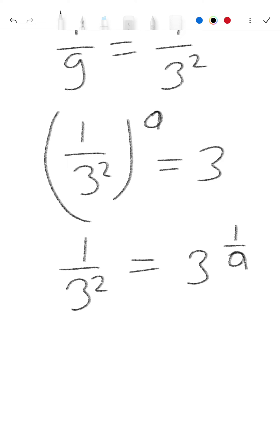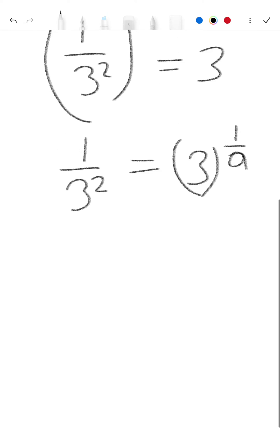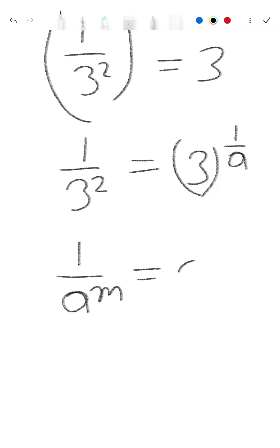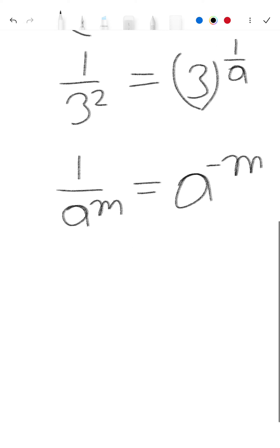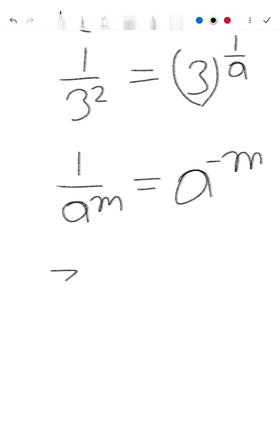We know that (1/a)^m = a^(-m). Here the base is 3 and m is 2, so we write this as 3^(-2) on the left side.